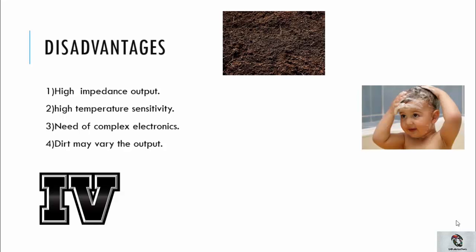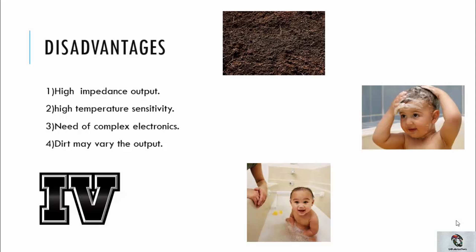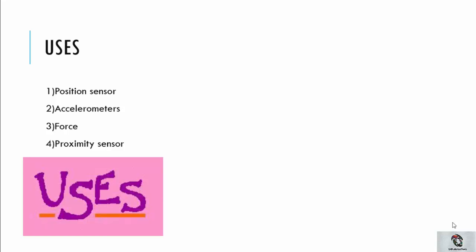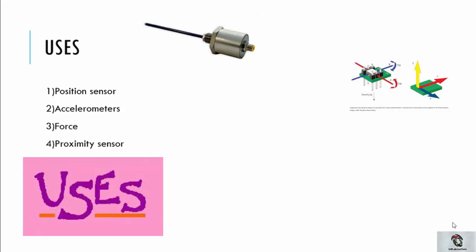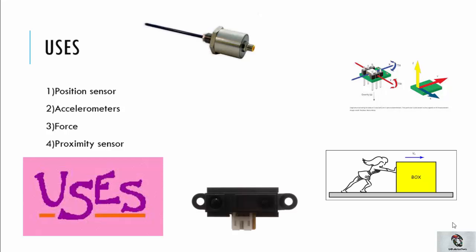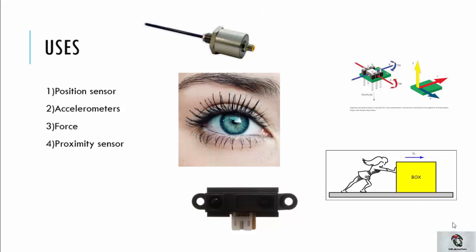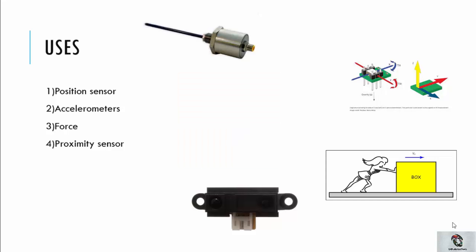So make sure you keep clean so that your output response does not decay — just a fun way to relate two things! Now let's look at the uses of a capacitor transducer. It is used in position sensors to monitor the position of an object, accelerometers, measuring force applied on an object, and proximity sensors. Concluding all these things, it is a very important device in day-to-day life — even if you can't see it with your eyes, it is used in instruments like bikes, cars, and other electronic equipment and gadgets.